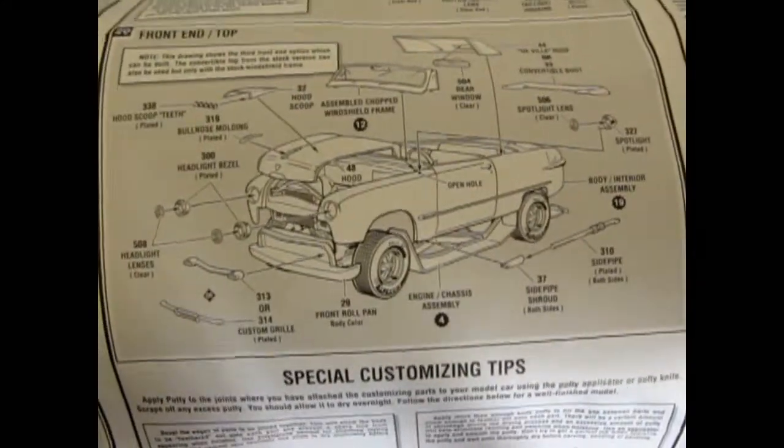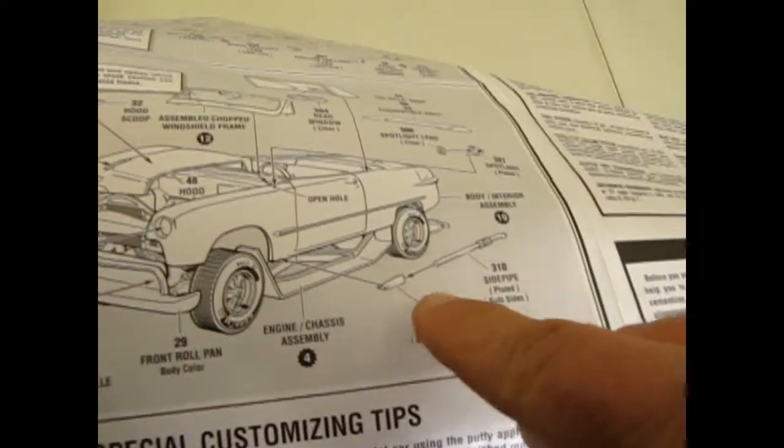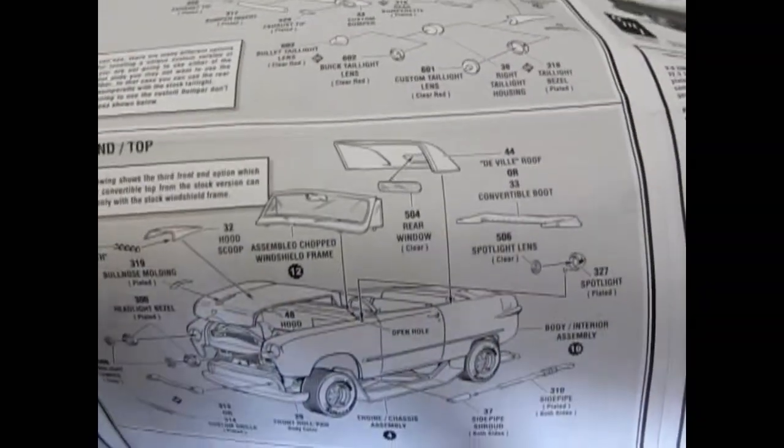And then up front, there's a whole bunch of Pontiac and Oldsmobile grille bits. Lake pipes. The chop top. You even have a coupe de ville roof. And yeah, this kit has it all.